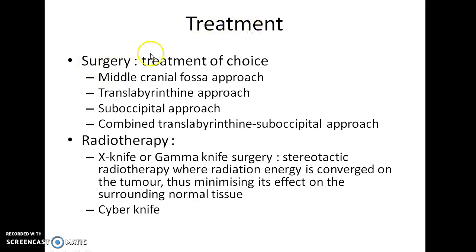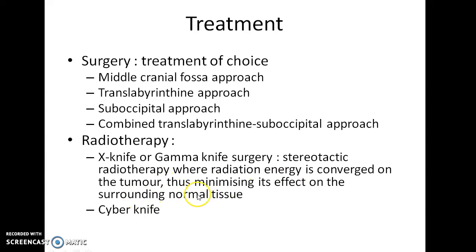Surgery is considered the treatment of choice for acoustic neuroma. Surgical approaches include the middle cranial fossa approach, translabyrinthine approach, sub-occipital approach, and combined translabyrinthine sub-occipital approach. Radiotherapy is indicated when surgery is contraindicated. Conventional radiotherapy is not preferred due to the low tolerance of central nervous tissue to radiation, so improved techniques such as X-knife or gamma knife surgery are used. This is a stereotactic radiotherapy where radiation energy is converged on the tumour, minimizing its effect on surrounding normal tissue. Cyberknife is another improved version of the X-knife technique.